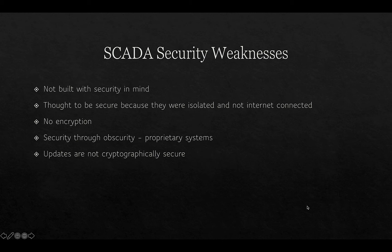Some security weaknesses particularly associated with SCADA include the fact that when SCADA was first developed, it wasn't built with security in mind. These systems were thought to be secure because they were isolated and not internet-connected, but that has changed over the past decade. They don't use encryption, partly to save on processing power and cost. They rely on security through obscurity via proprietary systems, with a belief that people wouldn't be able to attack them without understanding those systems. However, people are able to reverse-engineer the firmware and software. Updates to SCADA are also not cryptographically secure, representing another potential weakness.